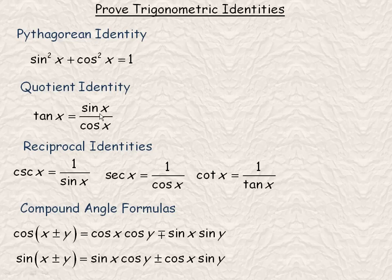There's also one for cotangent: cot x is cos x over sin x. The reciprocal identities are csc x = 1/sin x, sec x = 1/cos x, and cot x = 1/tan x.